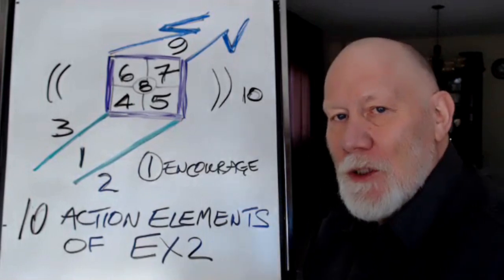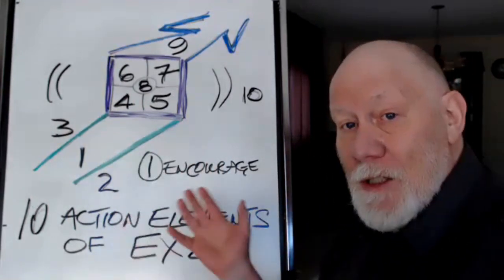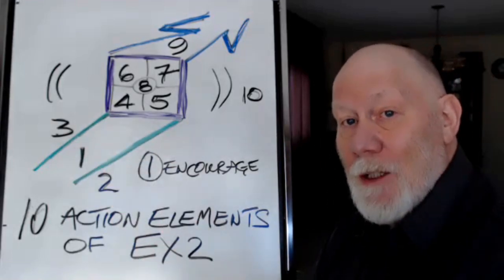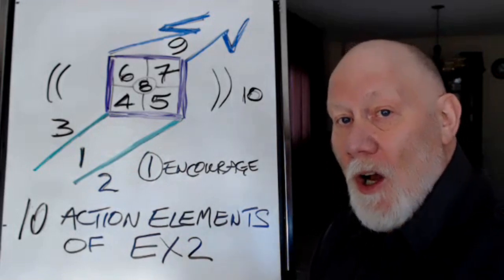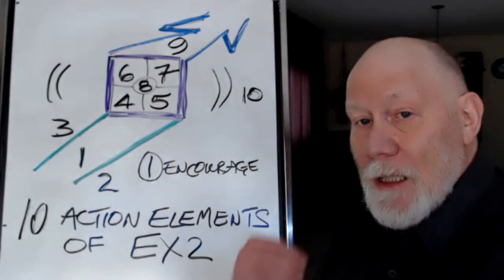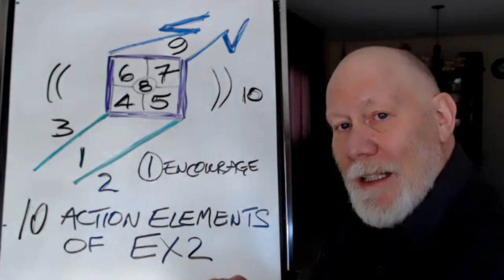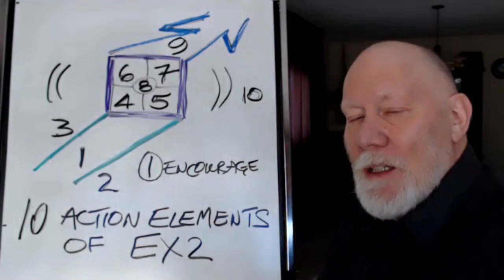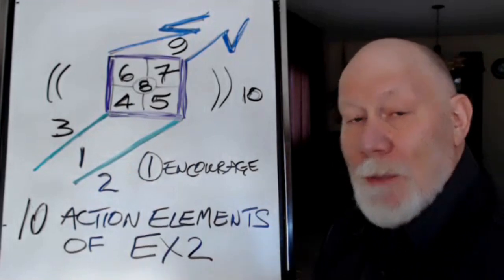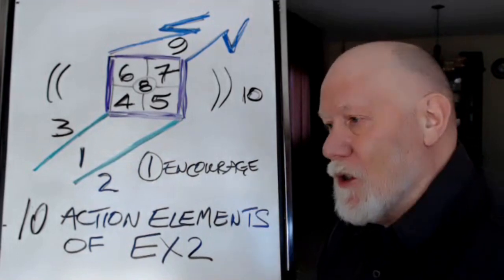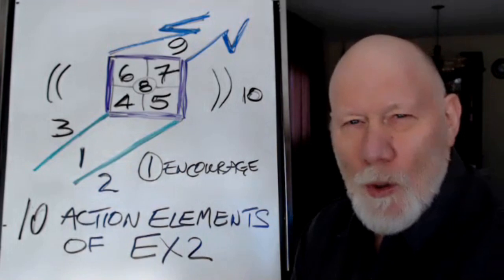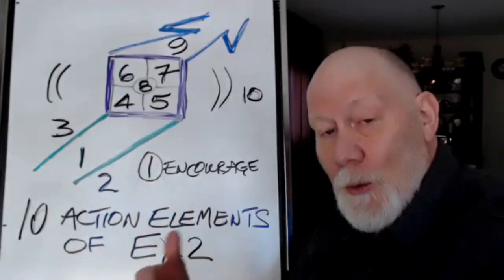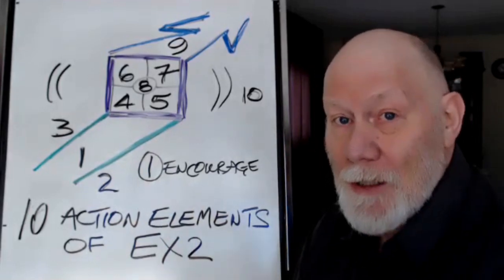I'm going to be sharing with you the diagram that's here, giving you insights into the 10 elements — the numbers you find on the diagram. I'll also explain why the diagram is created the way it is, because it suggests something for you to take into consideration as you start to create, co-create, or eco-create extraordinary experiences.